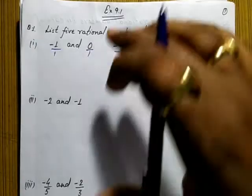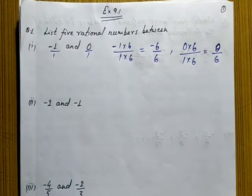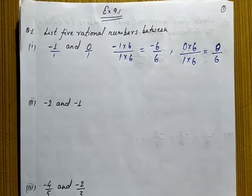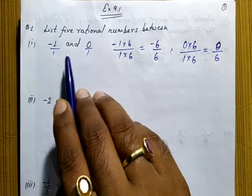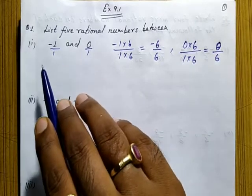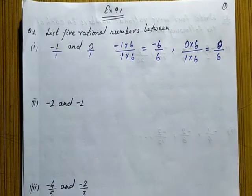Hello everyone, today we will start Exercise 9.1. I already told that we can find unlimited number of rational numbers between any two rational numbers. Between two rational numbers, there are unlimited rational numbers. Now let's start question number one.